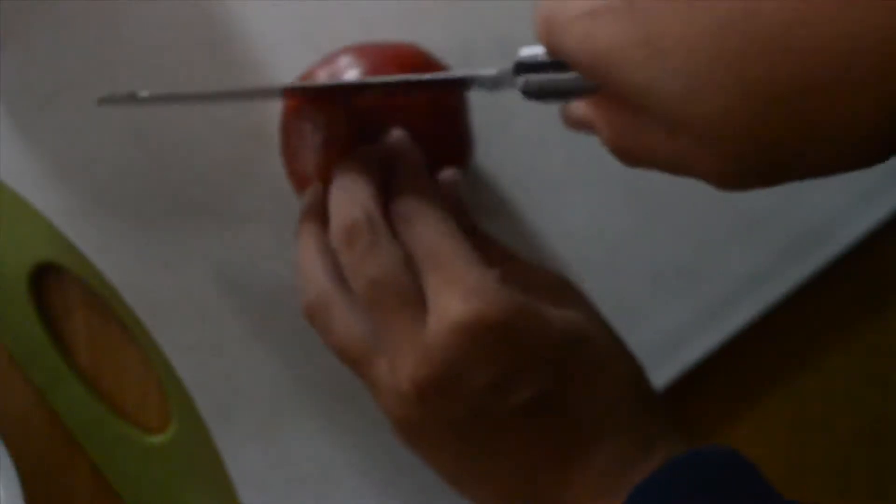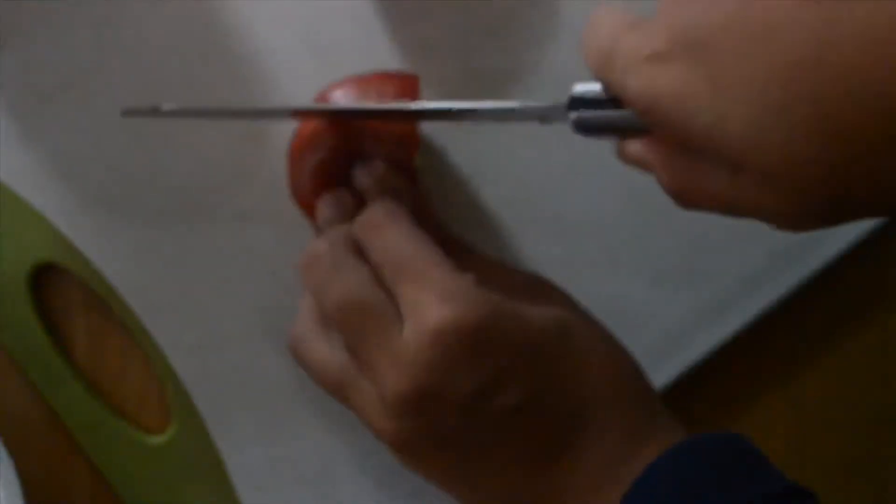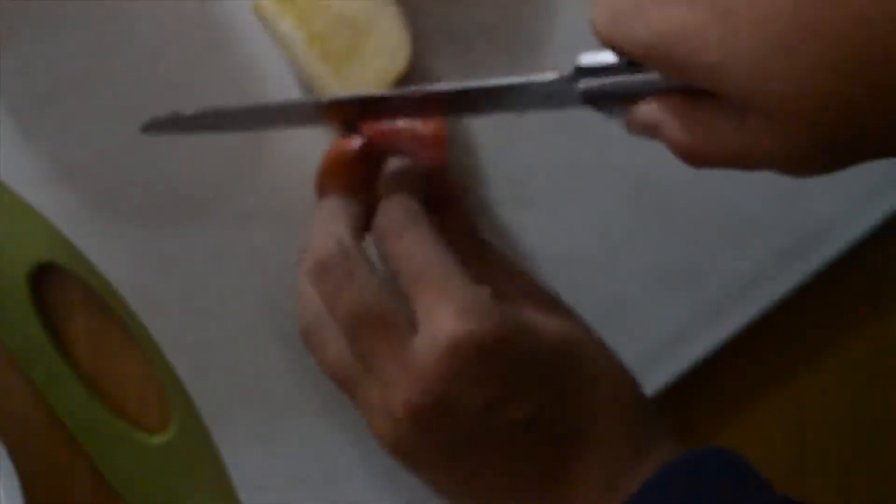This is the apple coring technique. Basically you want to imagine the pit in the center that you don't want to eat, so you cut all four sides that are around the pit and you have your apple slices. You can chop it from there if you want it for a snack, but there's the pit right there - throw it out.